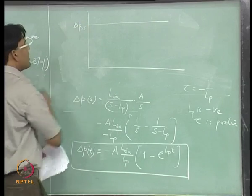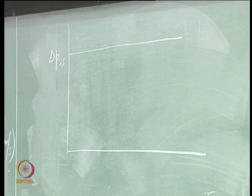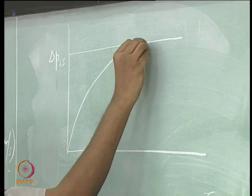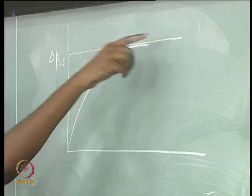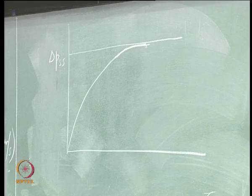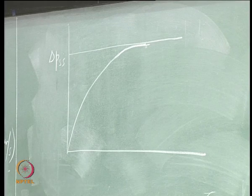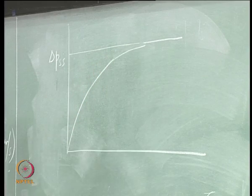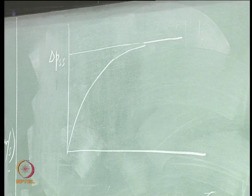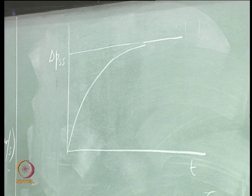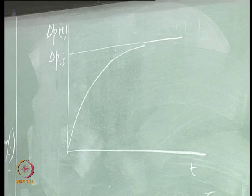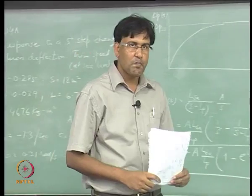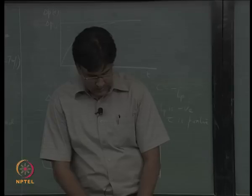This is delta P SS for 5 degree aileron deflection at step and the response is going to converge to a steady state roll rate. This is how roughly it will look like. So we can stop, we do not have any question.